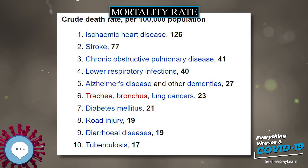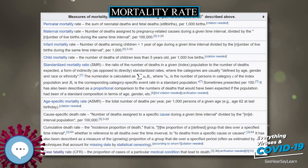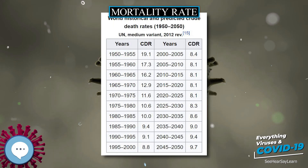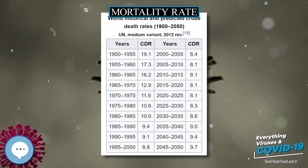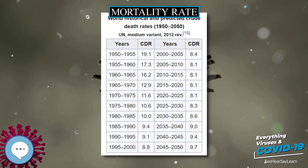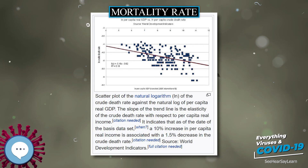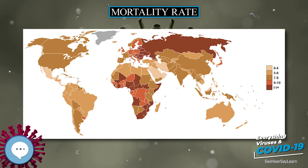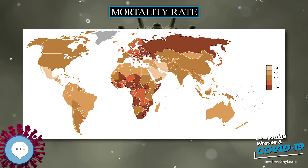Causes of death vary greatly between developed and less developed countries. The 10 countries with the highest crude death rate according to the 2016 CIA World Factbook are listed separately. According to Jean Ziegler, the UN Special Rapporteur on the Right to Food, for 2000 to March 2008, mortality due to malnutrition accounted for 58% of the total mortality in 2006.